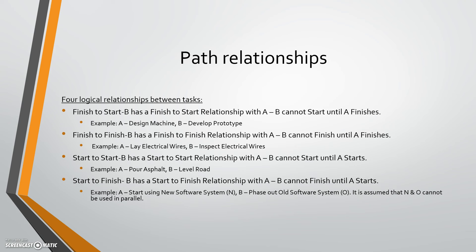Finally, there's start-to-finish — B cannot finish until A starts. For example, A is starting to use the new software system and B is phasing out the old system. You cannot phase out the old system until the new system is implemented, so there's going to be some overlap. When we talk about overlap, there's what they call lag — say in our finish-to-finish example, inspecting the wires may take less time than laying them, but they still must finish at the same time, so there will be a waiting or gap period. That's what they call a lag.